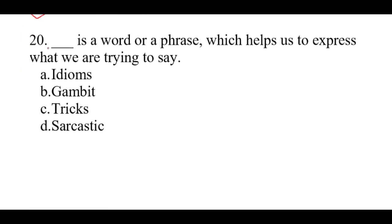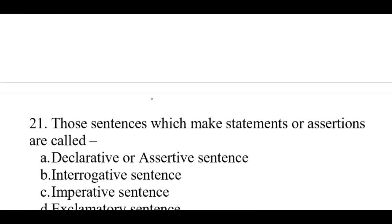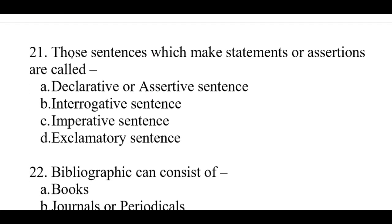Question number 20: A dash is a word or a phrase which helps us to express what we are trying to say. The right option is B: Gambit. Question number 21: Those sentences which make statements or assertions are called. The right option is A: Declarative or assertive sentence.